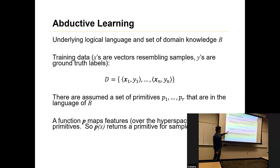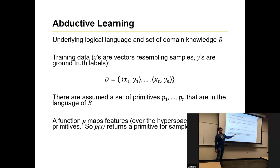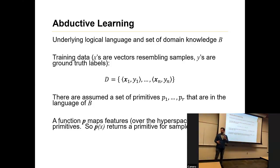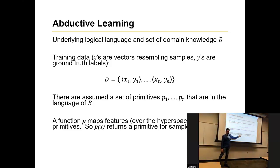We do have some perceptual function P that maps features over the hyperspace of the Xs to the primitives. We're going to say that P is maybe some under-trained model — something you downloaded from Hugging Face, or a model trained with a very limited amount of data. So it's not going to be that great by itself, but it gives you a primitive for some X in that hyperspace.